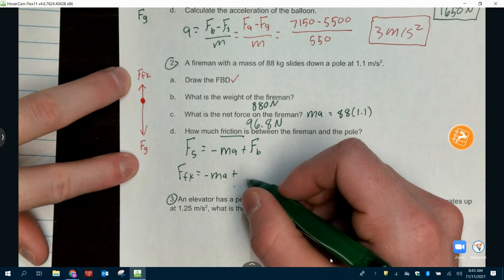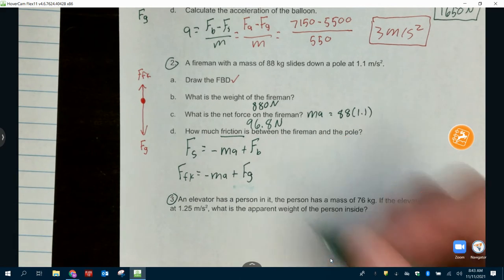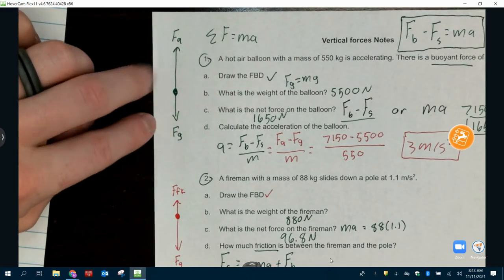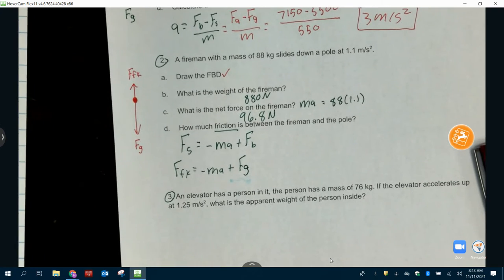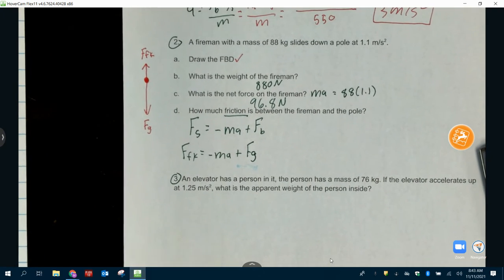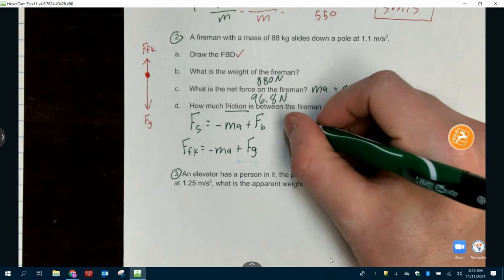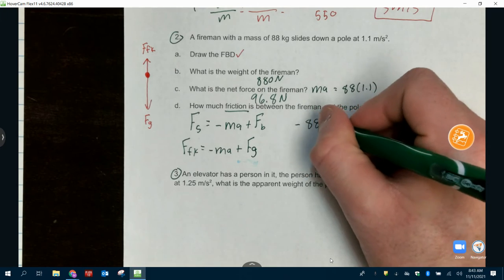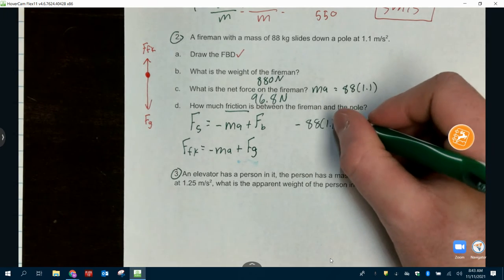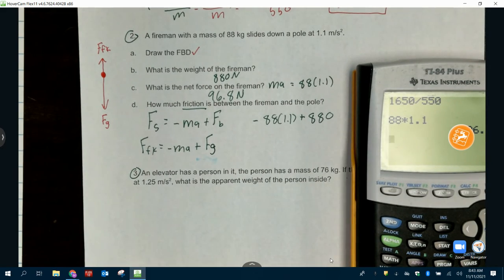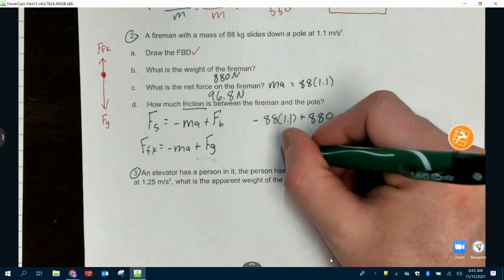So, we should have F_FK equals negative M-A plus what's our big force this time? What's bigger? F_FK or F_G? F_G. F_G. Yeah. Overthinking it. We're just looking at that and going, that's a small one. That's a big one. Which is opposite of what it was the problem before. So, gravity is not always small. Gravity is not always big. It depends on is it accelerating up or down. That's all that changes in our problem. So, from here, we just plug in negative 88 times 1.1 plus F_G was 880. 783.2. Good.